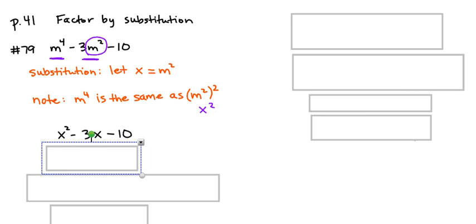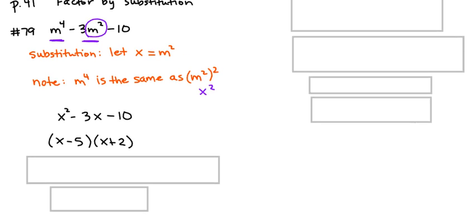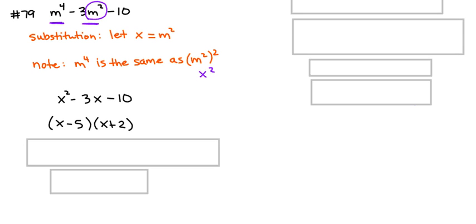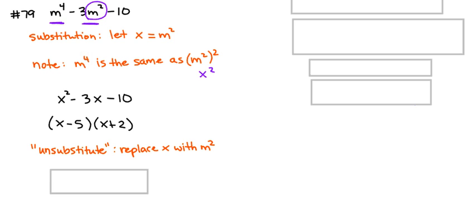This we can factor into x minus five times x plus two. But we don't want to leave it like that. We don't want to leave x in our answer because the original problem involved m. So we need to unsubstitute, or in other words, replace the x terms with m squared terms. So everywhere you see an x, you put m squared in its place.